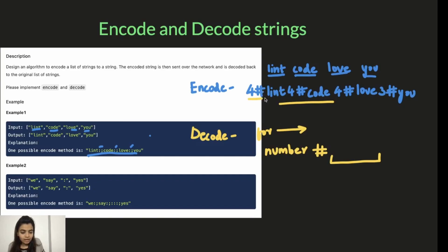As soon as we find four and hash, we know that after hash we have to consider four letters. So we consider one, two, three, four, lint. So lint is our word. Then we again find four and hash. After that, we consider four letters after hash. One, two, three, four. So our next word is code.